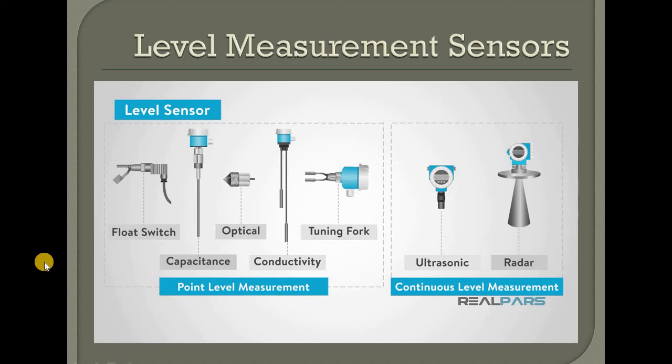Welcome you all. Last class, we discussed about level measurement sensors. Level measurement sensors — it is not just point level measurement or continuous level measurement. In point level measurement, it is described as a type. We discussed capacitance level measurement and the two points: the difference between high level and low level. We have to check the point level measurement.